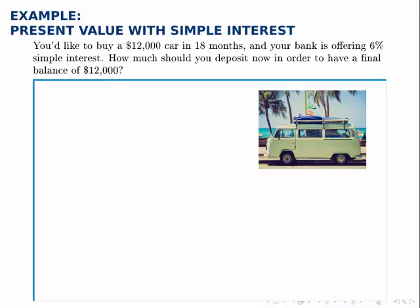Here's a simple interest example where we'll use the future value formula a little differently than we have before. The question says, you'd like to buy a $12,000 car in 18 months and your bank is offering 6% simple interest.